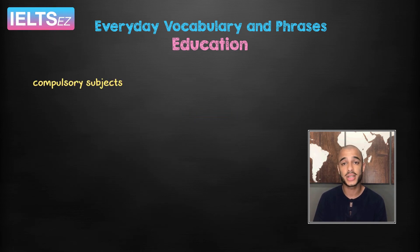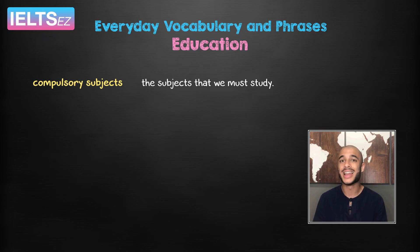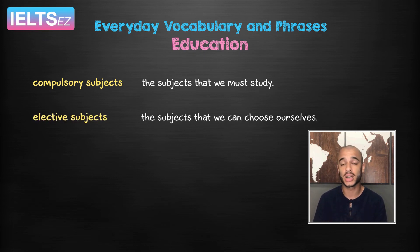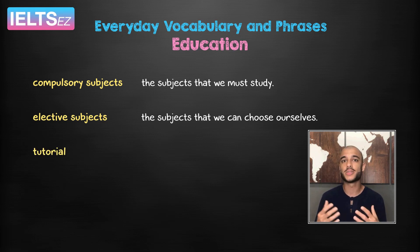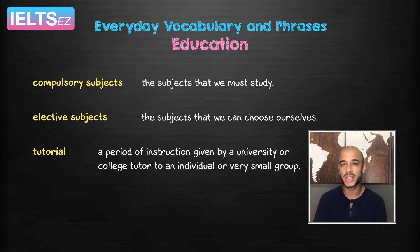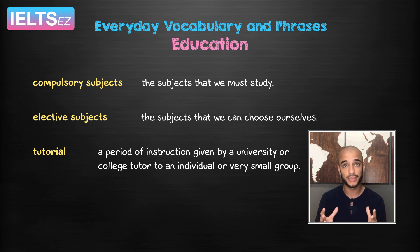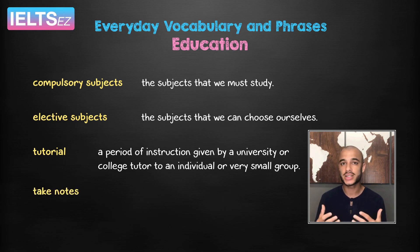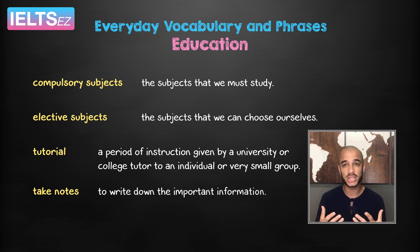Compulsory subjects are the subjects that we must study. On the other hand, elective subjects are the subjects we can choose ourselves. Tutorial: this is a period of instruction given by a university or college tutor to an individual or very small group. Take notes: this is to write down the important information.